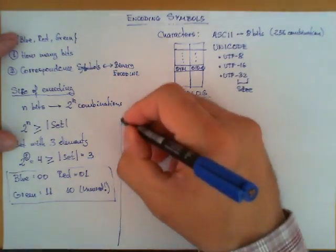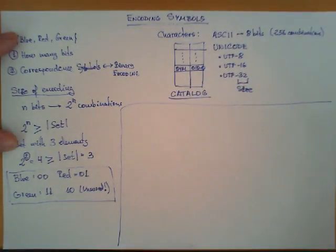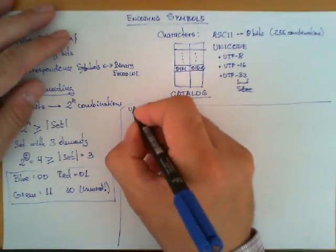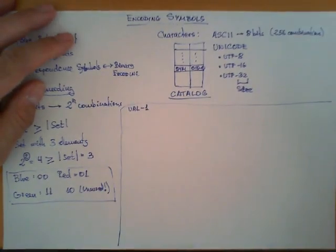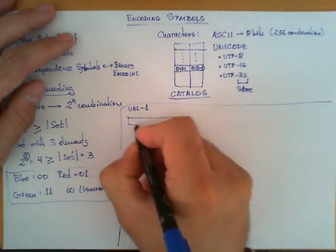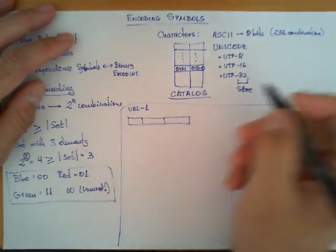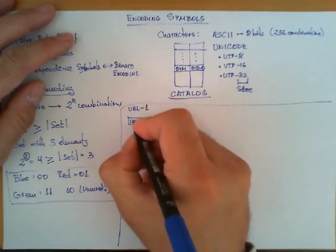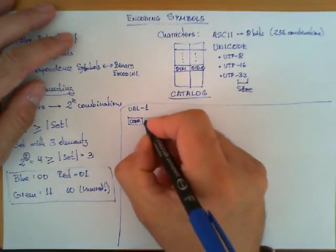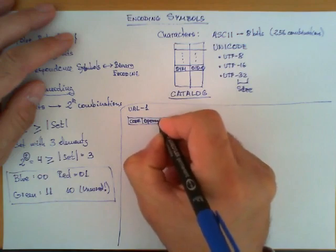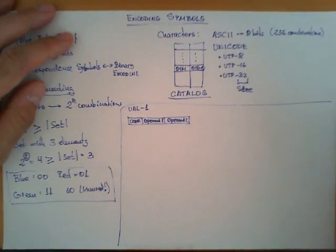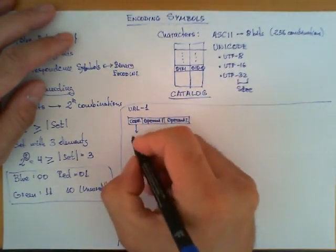Let's work out a totally different example. This is going to be a set of symbols that we are going to invent, and we are going to call it UAL1. My symbols are going to be words that are made of three elements, which I am going to write one next to the other. This first element is what I am going to call the code, and these two other elements are going to be the operands, operand 1 and operand 2.